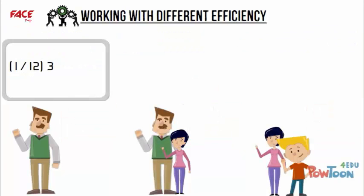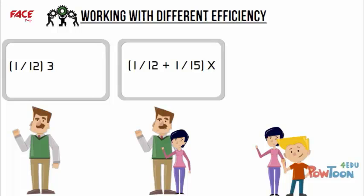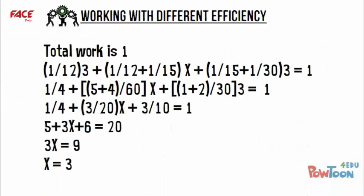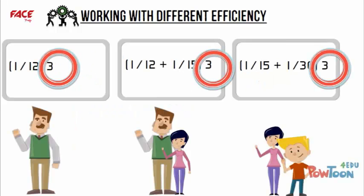Jack can complete 1/12th of the work in 1 day and works alone for the first 3 days. Hence, he completes 3 × (1/12) of the work. Jenny, who joins Jack after these 3 days, can complete 1/15th of the work in 1 day. Assume they worked for x days, so they completed x × (1/12 + 1/15) of the work. In the last 3 days, only Jenny and James worked, finishing 3 × (1/15 + 1/30). The sum of work done in these 3 segments equals 1. On solving this equation, x = 3. So they complete the work in 9 days.